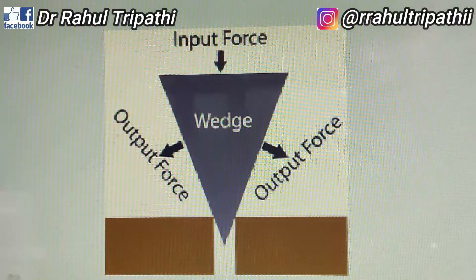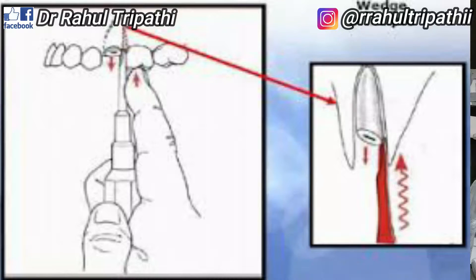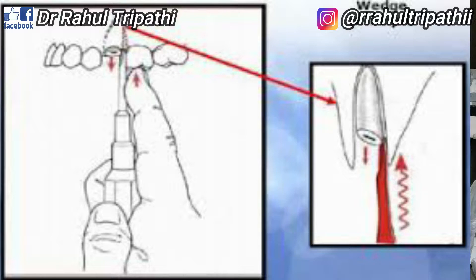You will see the mechanical advantage in this image. In this image you can see the elevator being placed and used to try to remove the root. The placement of the blade portion — the wedging — is done keeping the tooth and bone underneath.